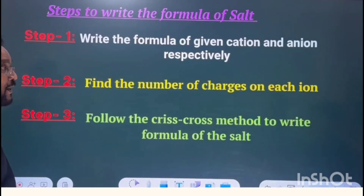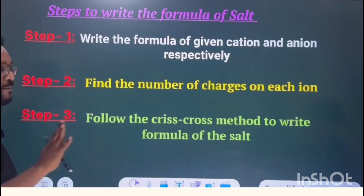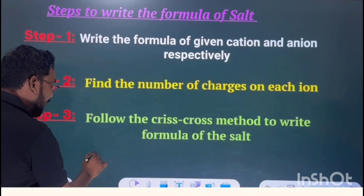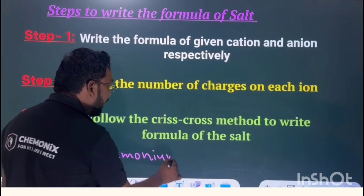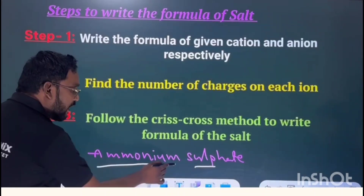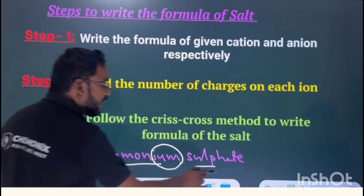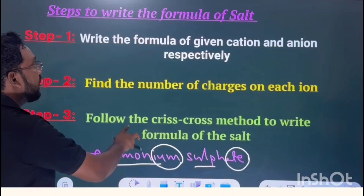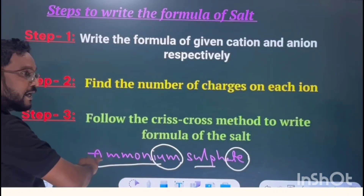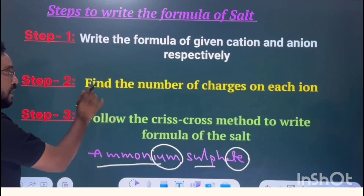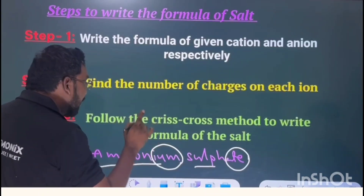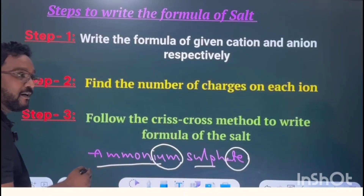Now let us see how to write the formulas of a salt. There are three simple steps to follow and you will answer questions easily. Step one: identify what is the cation and what is the anion from the given name. Step two: write the number of charges on each ion — how many positive charges on the cation and how many negative charges on the anion. Step three: follow the crisscross method. In the crisscross method, the number of cations in the formula equals the number of charges on the anion, and the number of anions equals the number of charges on the cation.